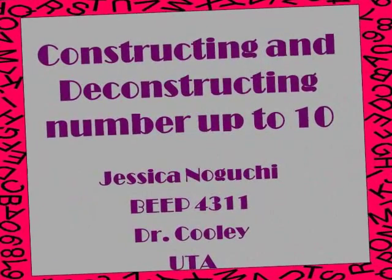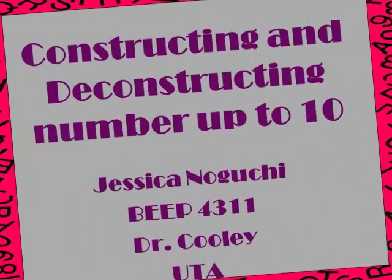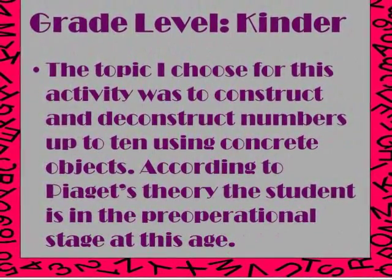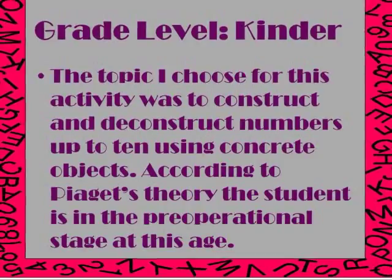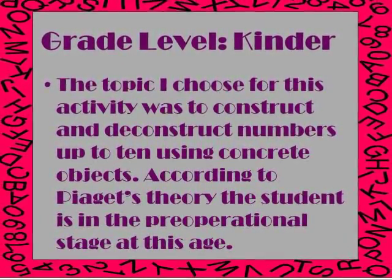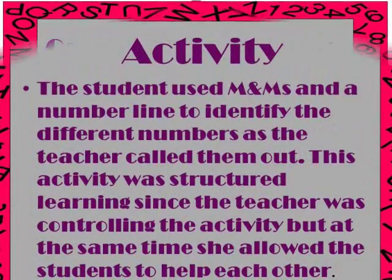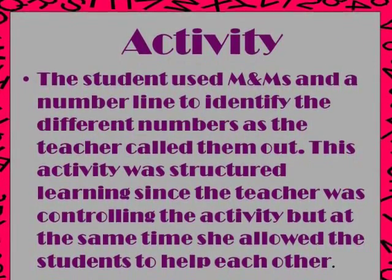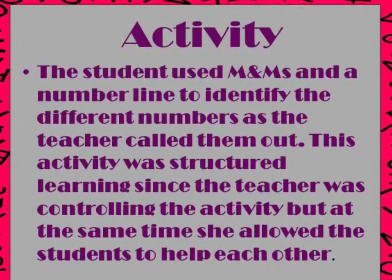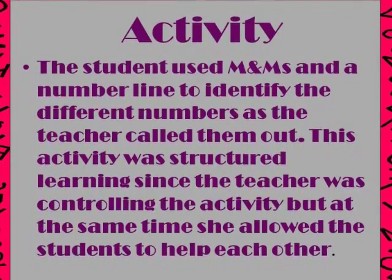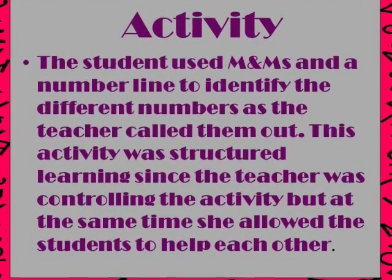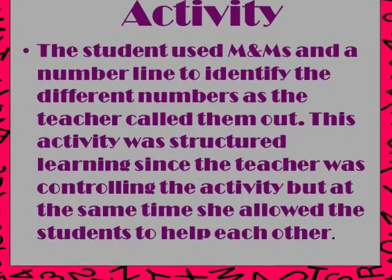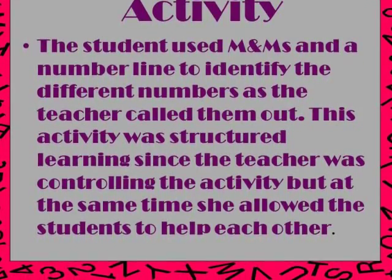The name of the activity is Constructing and Deconstructing Numbers up to 10. The grade level is Kindergarten. I chose this topic because according to Piaget's theory, the student in this age is in the pre-operational stage. The activity consisted of having students use M&Ms and a number line to identify different numbers as the teacher called them out. This was a structured learning activity because the teacher controlled the whole activity, while also allowing students to help each other.